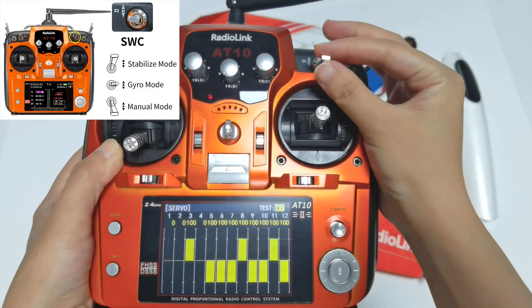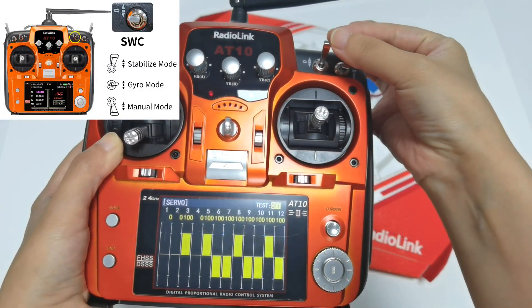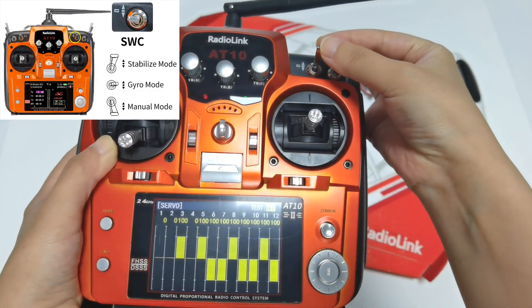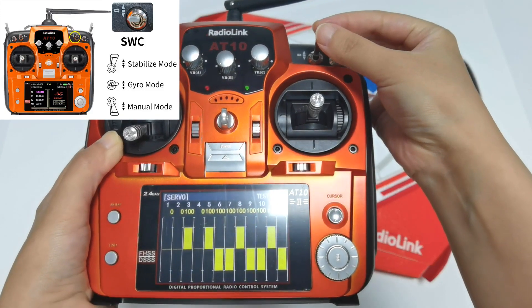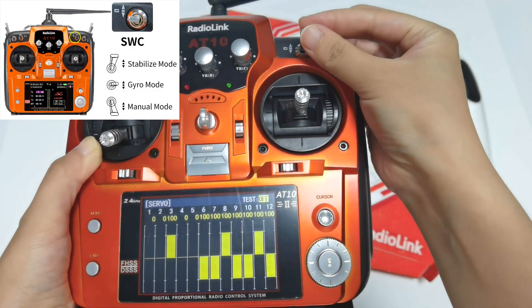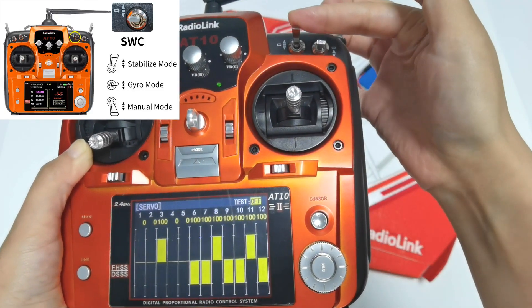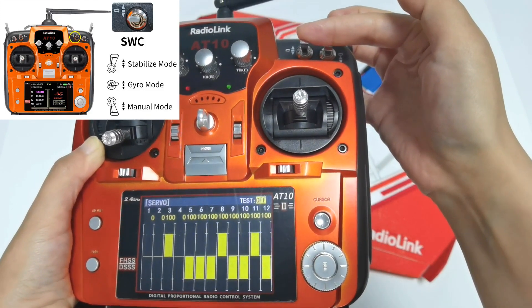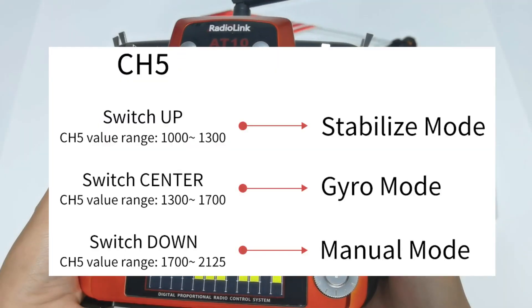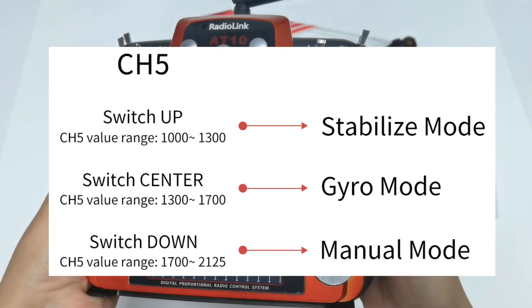Push switch C up for stabilized mode. Push switch C to the center for general mode. Push switch C down for manual mode. When using other brand transmitters, please refer to the picture on the screen to switch the flight modes.